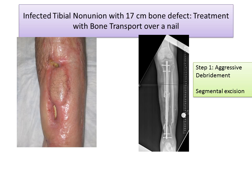This next case illustrates the evolution and the new way that we're dealing with this problem. This is a very challenging situation of a 29-year-old male who presented to me with an infected tibial non-union and a 17-centimeter bone defect — that's a large bone defect. As you can see, he presented with an open wound and with pus draining out of the leg, and the x-ray shows a very suspicious large area of bone that appears to be infected and dead.